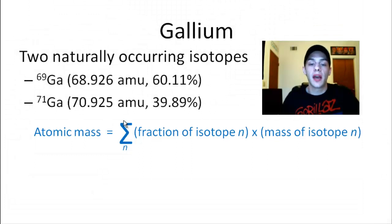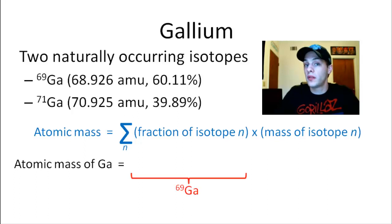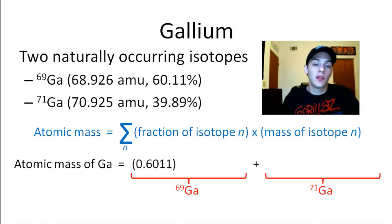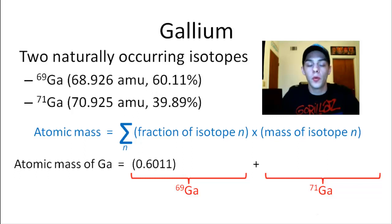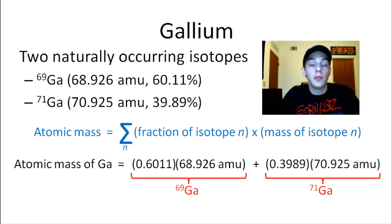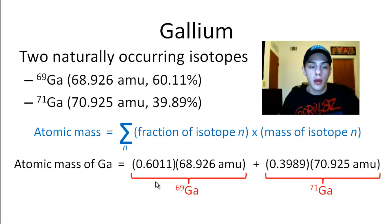For gallium we have two terms. To get the atomic mass, we sum a term for gallium-69 and a term for gallium-71. The gallium-69 term is 0.6011 multiplied by 68.926 AMU. We add to that the gallium-71 term: 0.3989 multiplied by 70.925 AMU. I'll pause briefly to allow you to pause the video and calculate this for yourself.